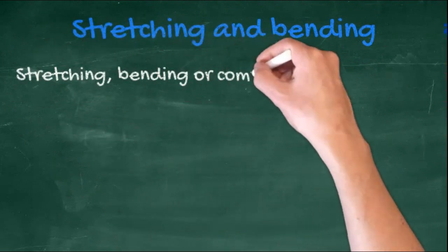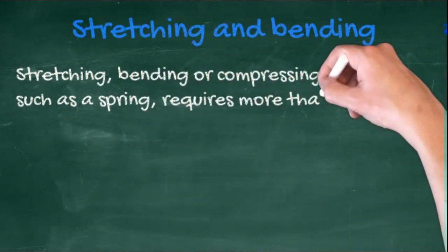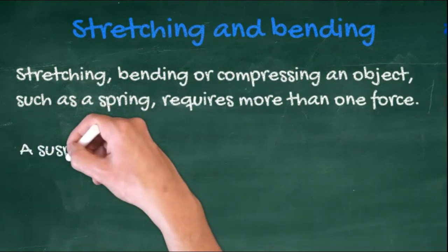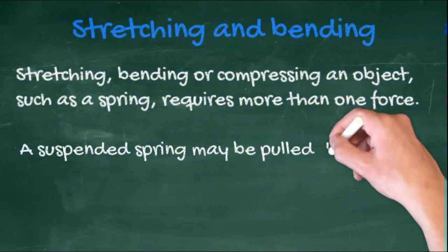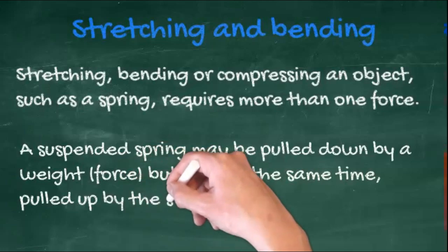Stretching, bending or compressing an object, such as a spring, requires more than one force. A suspended spring may be pulled down by a weight, that's a force, but it is at the same time pulled up by the stand that's supporting it.